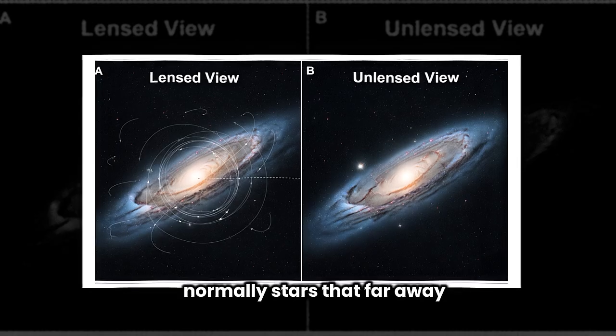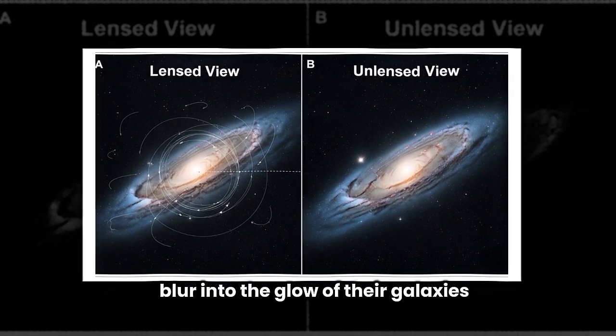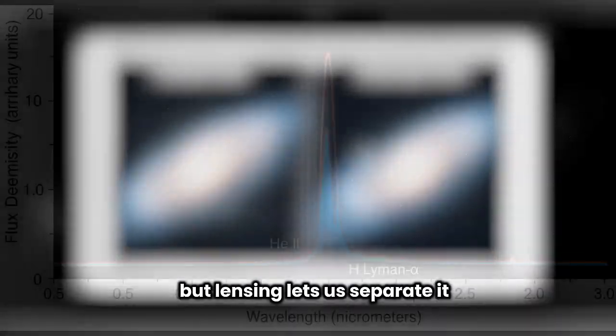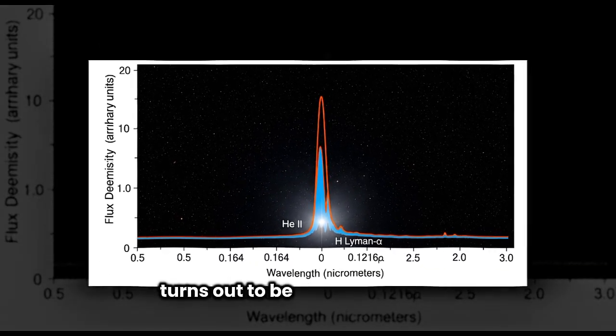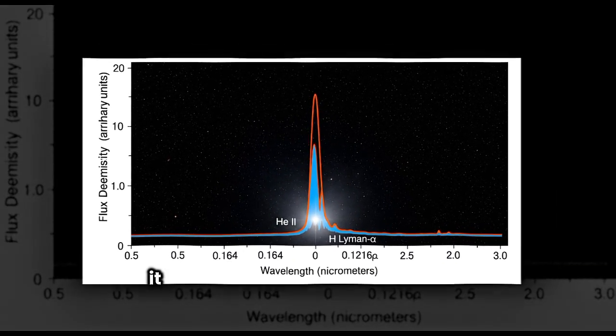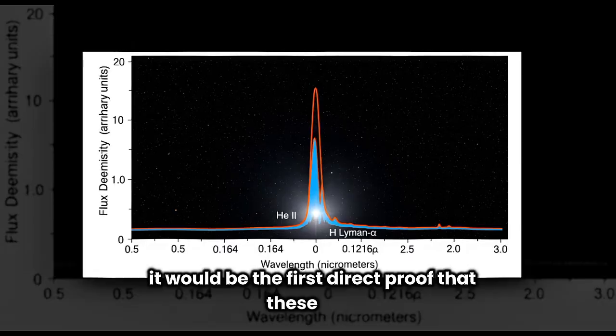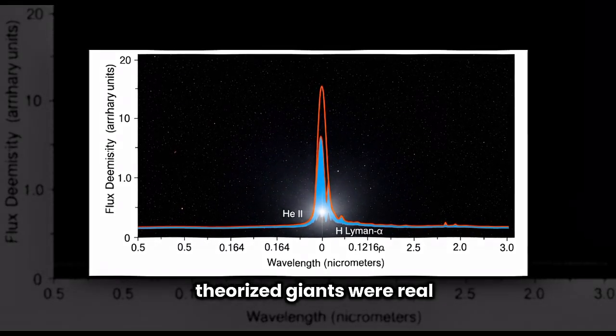Normally, stars that far away blur into the glow of their galaxies, but lensing lets us separate it. And if Earendel, or something like it, turns out to be a Population 3 star, it would be the first direct proof that these long-theorized giants were real.